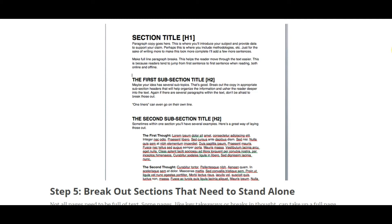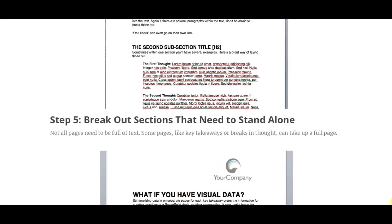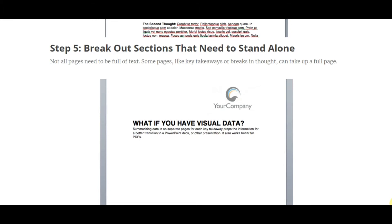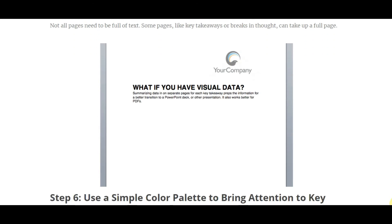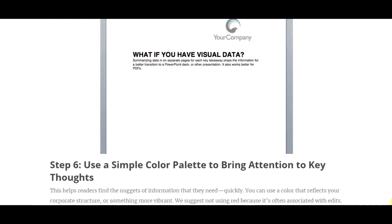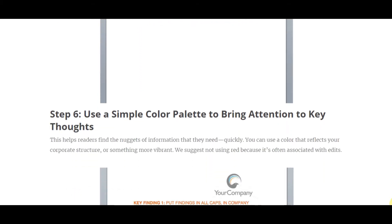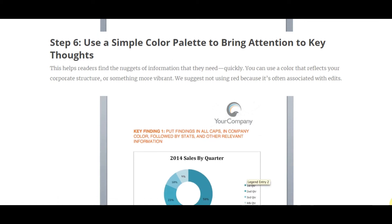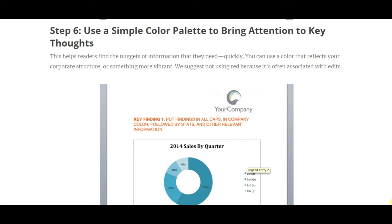Break out sections that need to stand alone. Not all pages need to be full of text — key takeaways or thought breaks can take up a full page. If you have visual data, include it to support the document. Use a simple color palette to bring attention to key thoughts, helping readers find the nuggets of information quickly. You can use a color that reflects your corporate structure, though avoid red as it's often associated with edits. Put findings in all caps in company color, followed by stats and other relevant information.